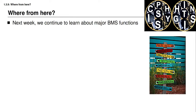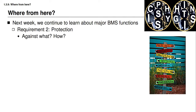Next week you will continue to learn about the major battery management system functions. We continue by looking at each requirement already identified, studying these requirements in more detail in order. We start by looking at the second requirement, which has to do with protection, and ask what do we need to do to protect the battery pack and to protect the user, and how do we actually do it?